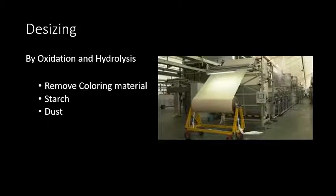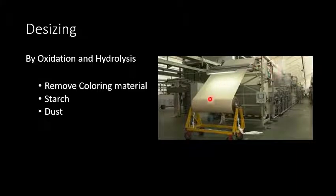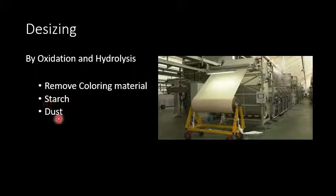Desizing में oxidation और hydrolysis के जरिए clearing material — जैसे starch और dust — को remove किया जाता है। Industries में बड़े पैमाने पर hydrolysis और oxidation process किया जाता है। इससे starch, dust, और clearing material जैसी impurities सारी remove कर दी जाती हैं।